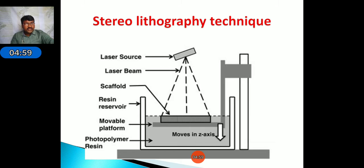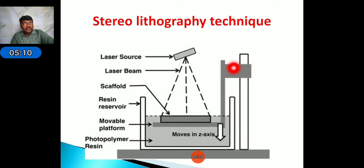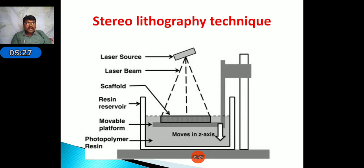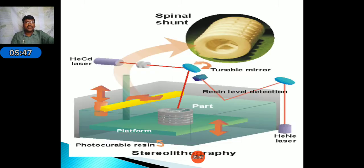Observe this diagram: from this arrangement, the movable platform lowers downward after creating each layer. The laser source produces a laser beam that falls on the platform. The mobile platform moves the completed layer downward. Photo-polymer resin is used — whenever the laser falls on the resin, a solid layer is created.